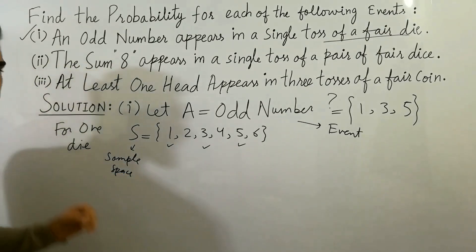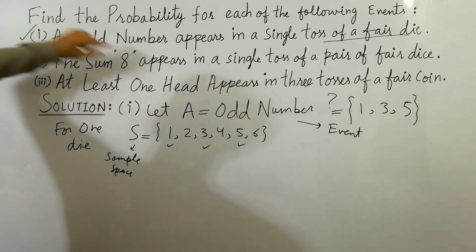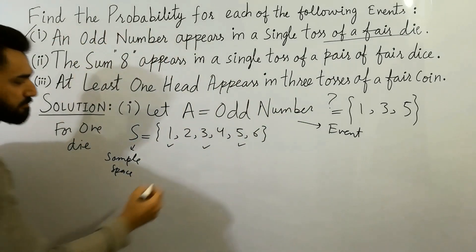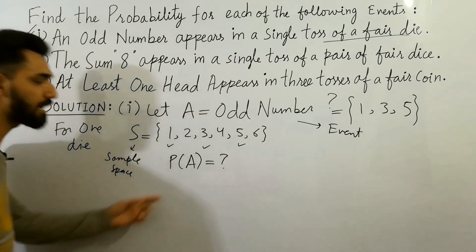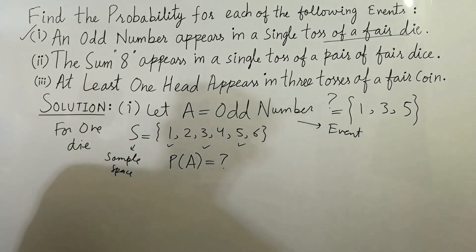Now, the question is very important. Find the probability. Question is that? Find the probability. That means, find the probability of A. What is the probability of A? That's the question.